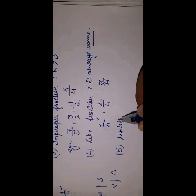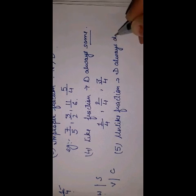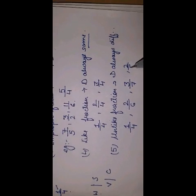Now the 5th one is unlike fraction. Jaise like mein denominators same hote hain, unlike mein denominators are always different. Jaise ki cake ko 4 parts mein divide kiya aur 1 fourth mila; chocolate bar ko 6 parts mein divide kiya aur 2 by 6 mila; cake ko 7 parts mein divide kiya aur 3 out of 7 mila. Chahe numerator same ho jaaye, agar denominator alag hai toh unlike fractions kehlati hain.